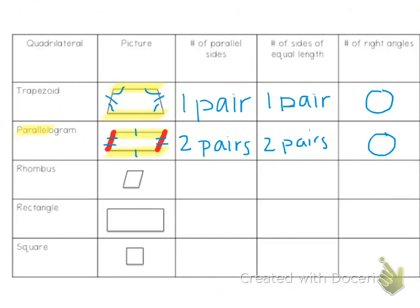A rhombus also has to have two pairs of parallel sides. What makes a rhombus special is it has to have four equal sides — it's like a square in that all the sides are equal. But a rhombus does not have to have any right angles, so in this picture we have zero right angles.